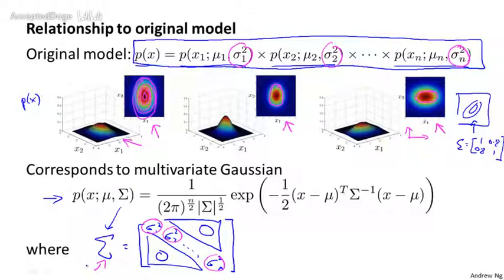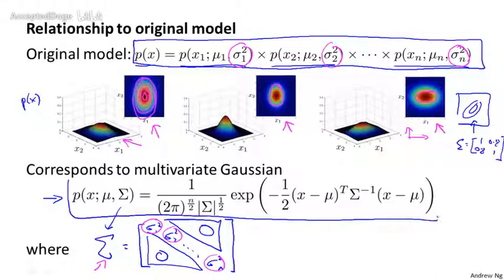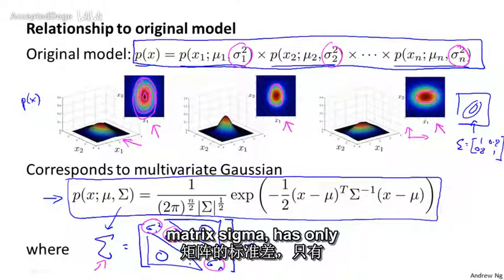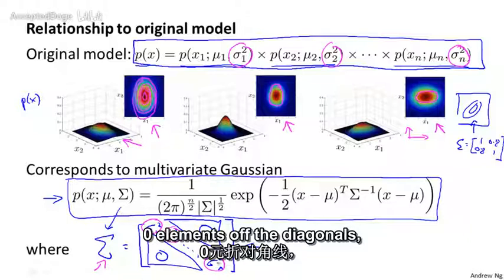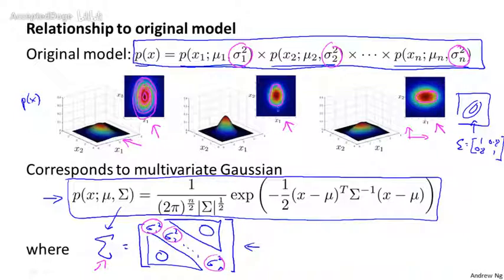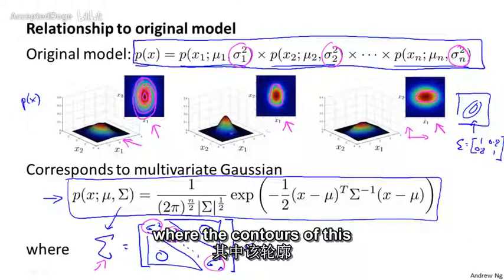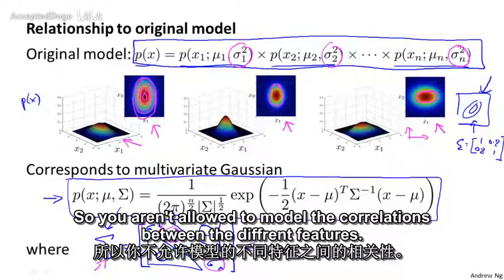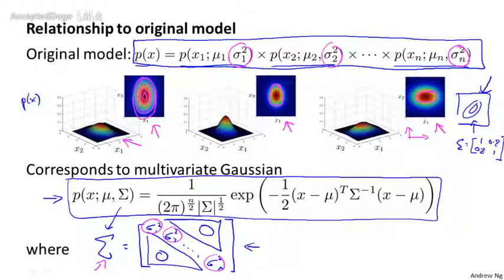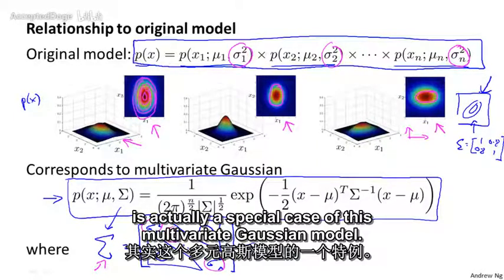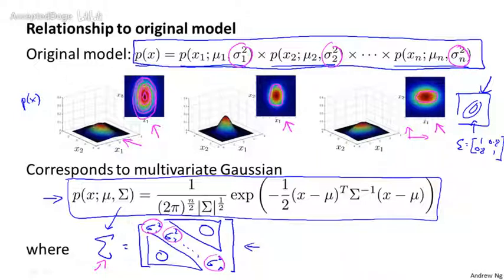That is, the new model using the multivariate Gaussian distribution corresponds exactly to the old model if the covariance matrix sigma has only zero elements off the diagonals. In pictures, that corresponds to having Gaussian distributions where the contours are axis-aligned, so you aren't allowed to model the correlations between the different features. In that sense, the original model is actually a special case of the multivariate Gaussian model.